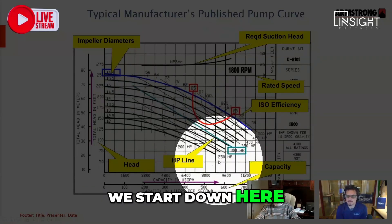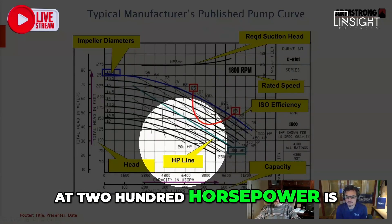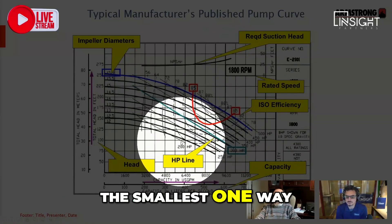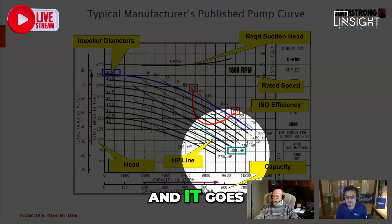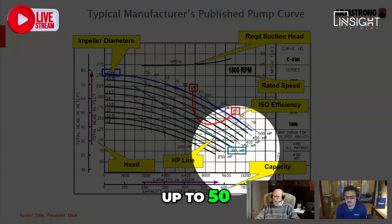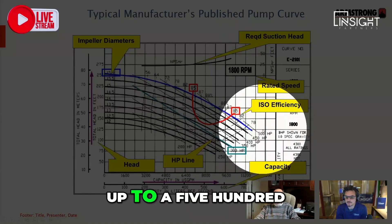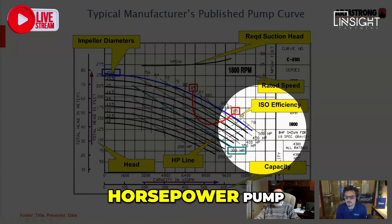So you see we start down here at 200 horsepower as the smallest, and it goes up to 250, 300, 350, on up to a 500 horsepower pump. We're looking to be using that in the middle of the curve.